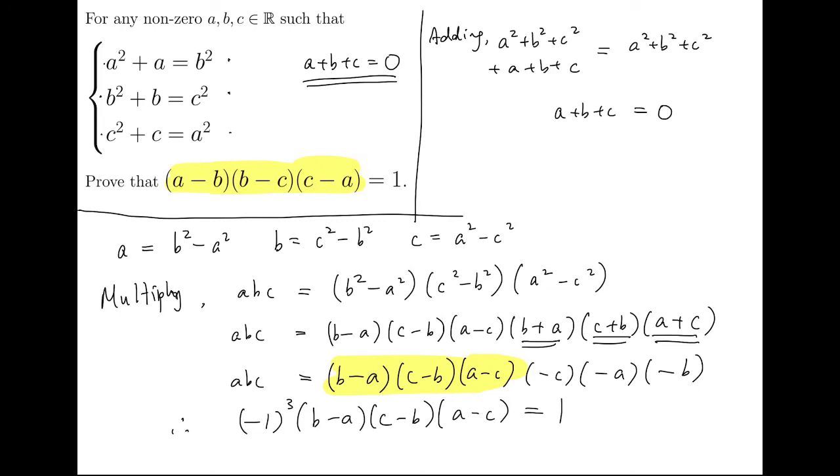Now we multiply minus one into each of the three terms, b minus a, c minus b, and a minus c. We'll get (a minus b) times (b minus c) times (c minus a).